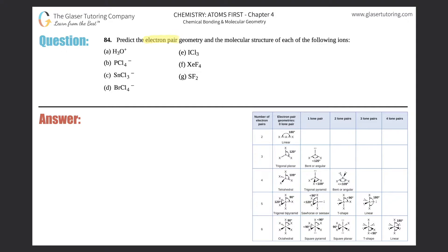Number 84: predict the electron pair geometry and the molecular structure of each of the following ions or molecules. We've done a lot of questions on electron pair geometry and molecular structure, so this will be a quick review. To do this, you have to find your Lewis structures first. If you need help, go back to number 40 in this chapter to start your Lewis structure journey.